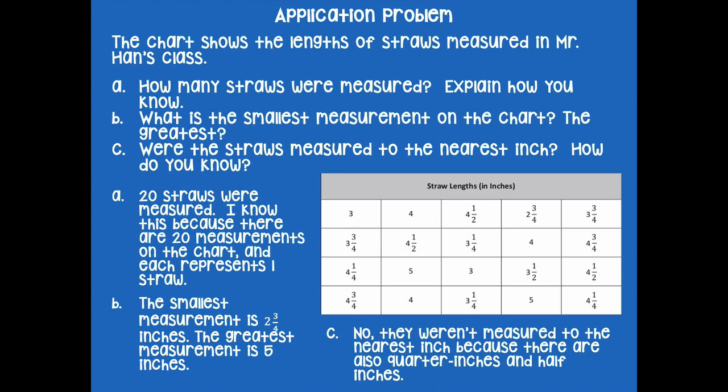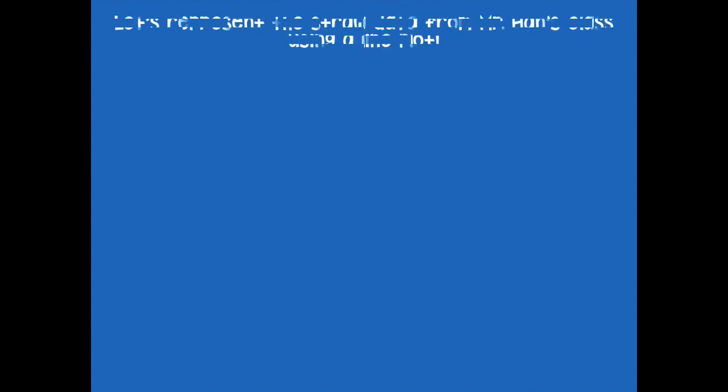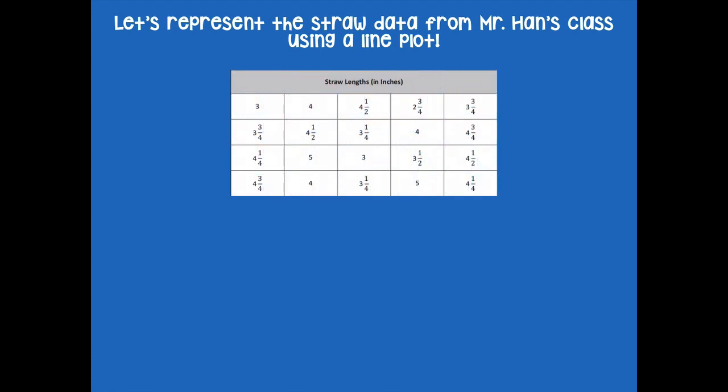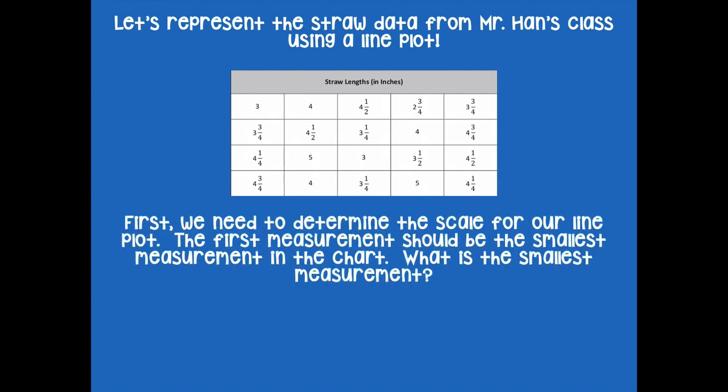Now friends, we're going to take the same information that we just did in our application problem and do that in our concept development. Let's represent the straw data from Mr. Hahn's class using a line plot. Here's the same data we just used. First, we need to determine the scale for our line plot — the first measurement should be the smallest measurement in the chart. We just found that in our application problem, so what's the smallest measurement?